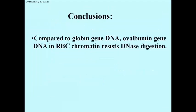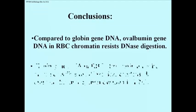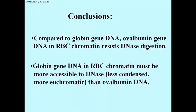The conclusions are that the ovalbumin gene in red blood cell chromatin is resistant to DNase digestion because it is part of heterochromatin rather than euchromatin. Likewise, the globin gene DNA gets digested very quickly after treatment with DNase 1 of chromatin from a red blood cell because it's active and in a region of chromatin in a more open configuration — therefore more accessible to DNase, and also in the cell, more accessible to the enzymes of transcription.